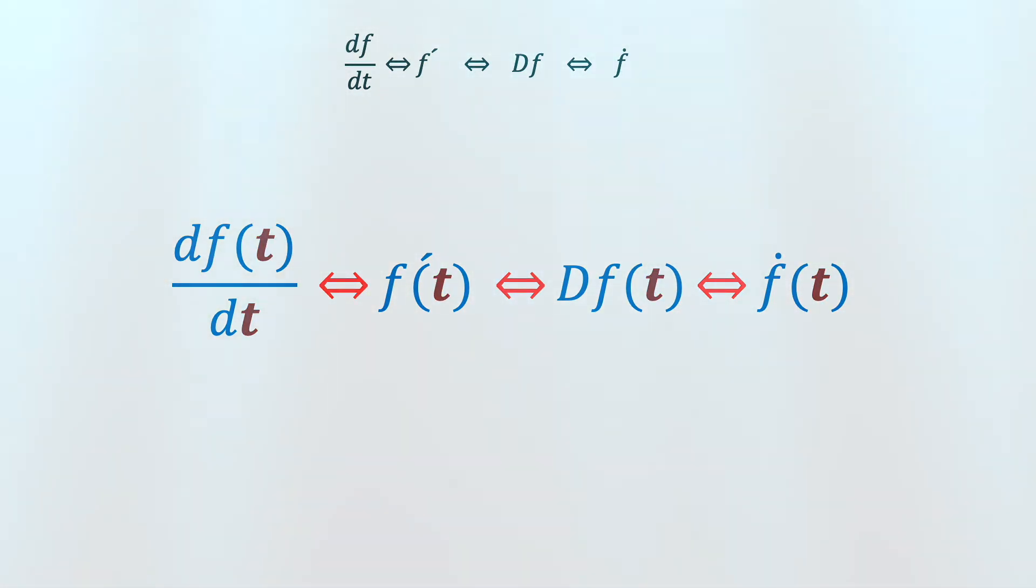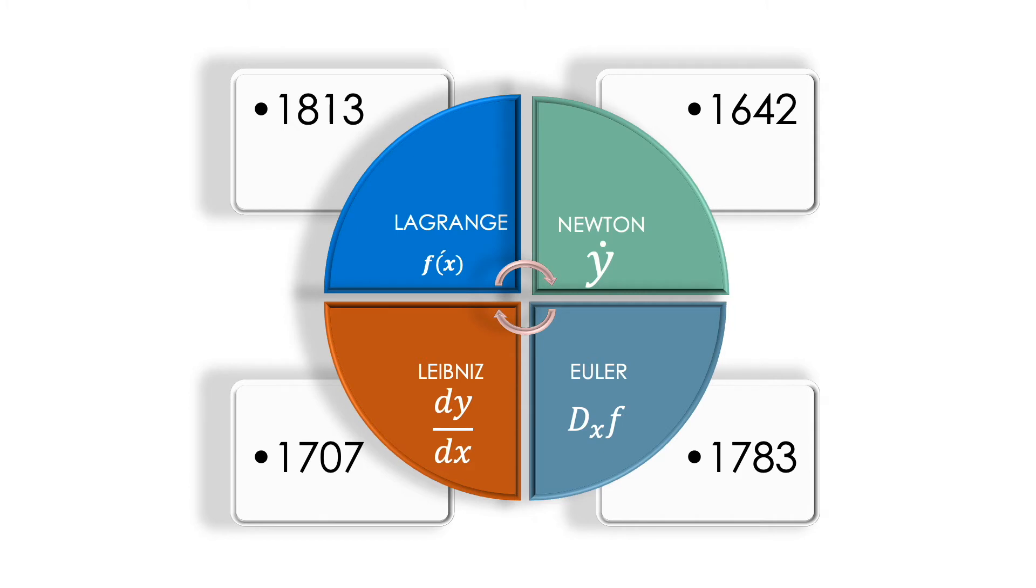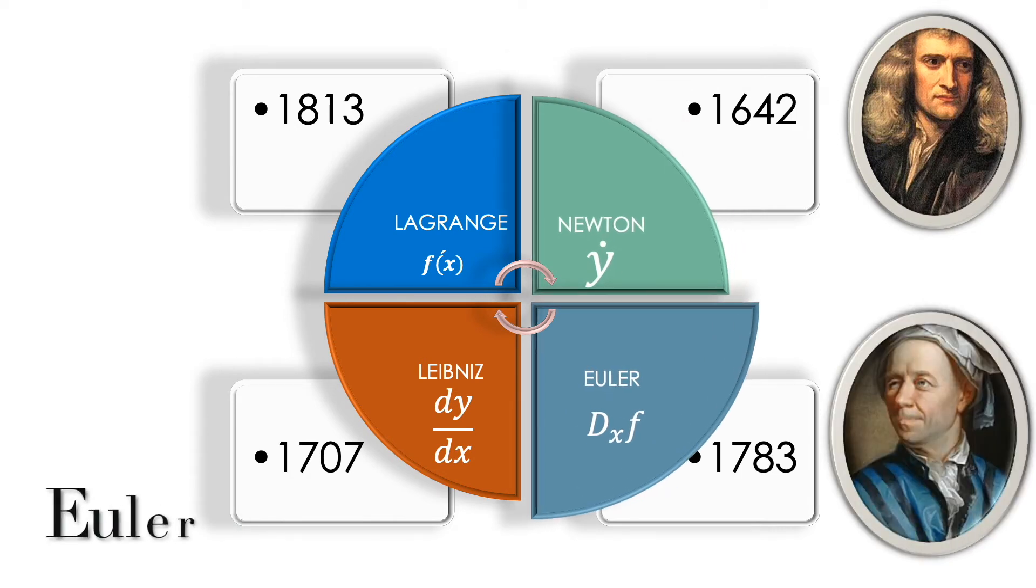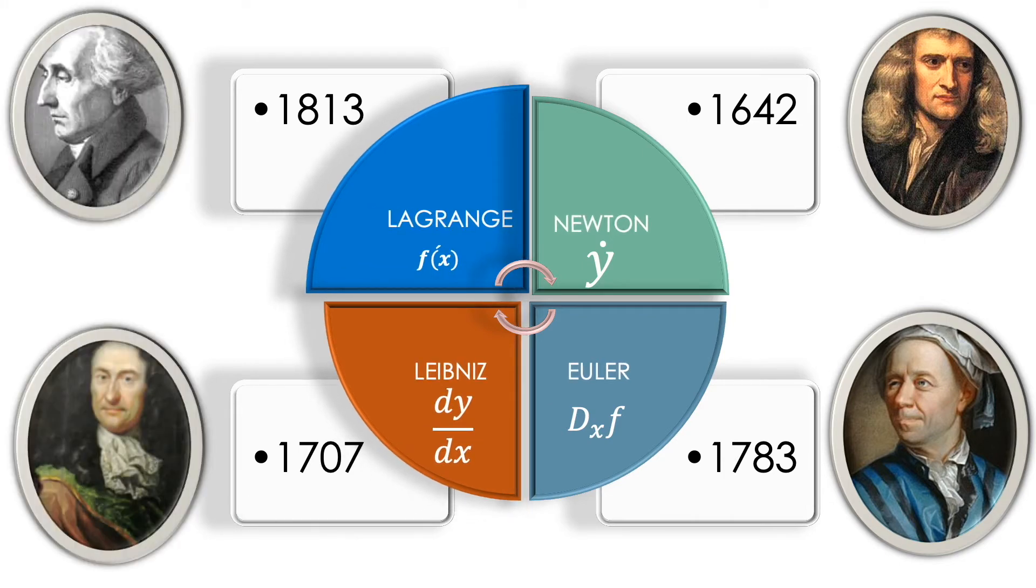Let's continue to straighten out these ideas. The big four contributors to the invention, development, and notation of the derivative are Isaac Newton, Leonard Euler, Gottfried Leibniz, and Joseph-Louis Lagrange.